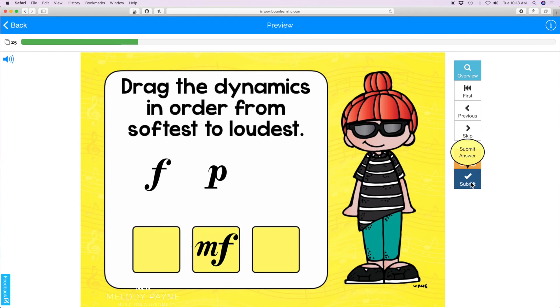So now we know that those two are incorrect. It puts them back on the slide and the student gets another chance. Softest to loudest—oh, that's what I need to do. And this time, correct.